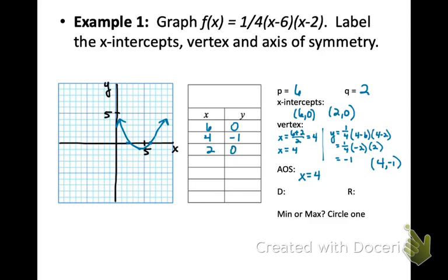And this one, you can see it opens up our a value, positive 1 fourth, and it's wider than the parent function. Domain is going to be all real numbers, and then our range will be that y value of the vertex, negative 1. So all the values that are greater than negative 1, equal to as well. And since it opens up, that's a minimum.